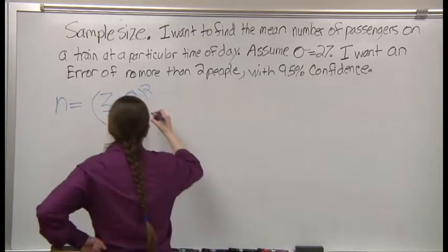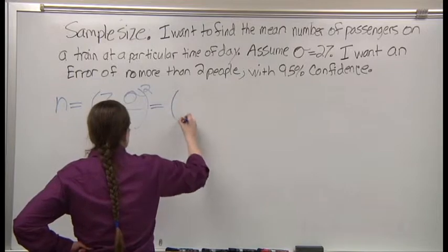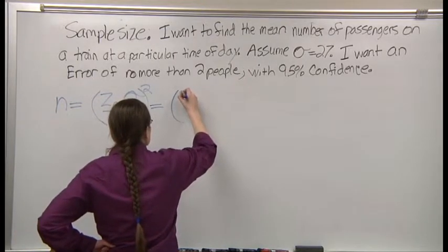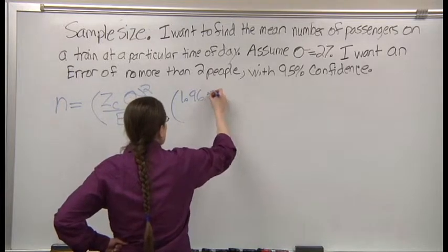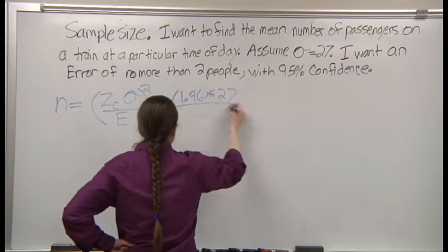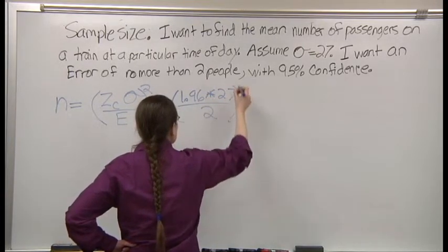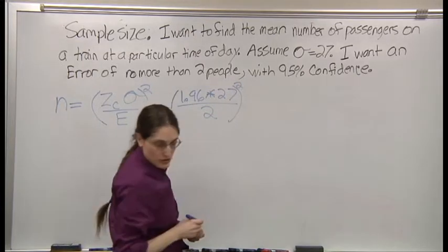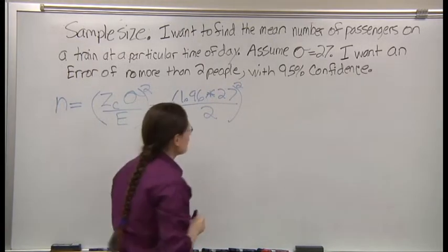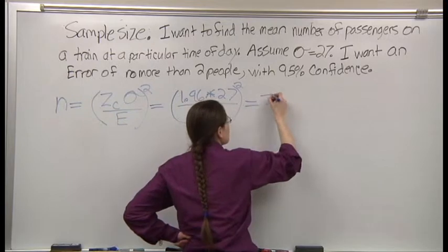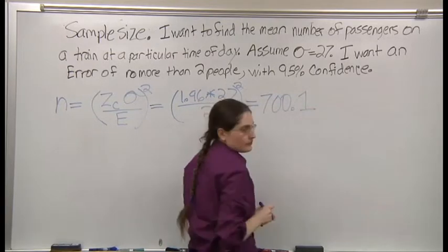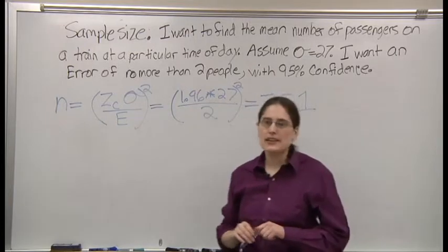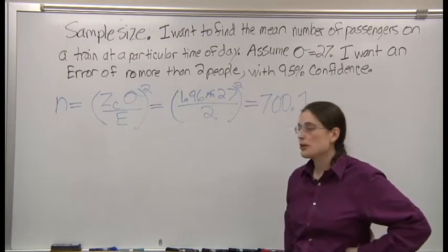Let's plug in. Times 27 divided by 2 and then square all of it. We get about 700.1.